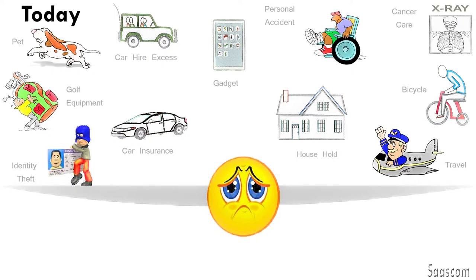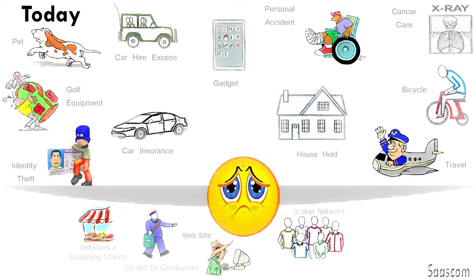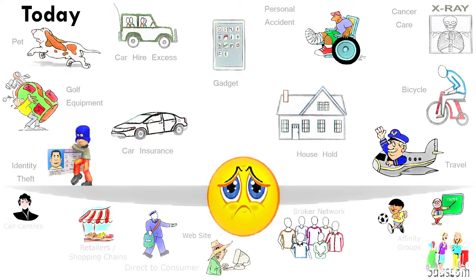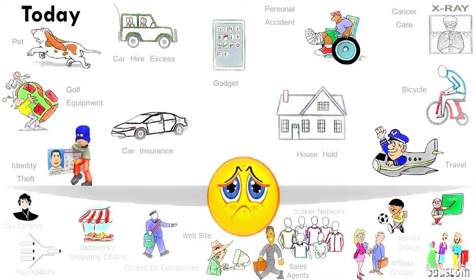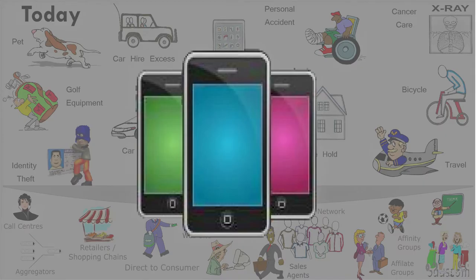The number of distribution channels is also growing rapidly. As well as the direct to consumer and broker channels, there are now the direct websites, partnerships with retailers and shopping chains, selling through affinity groups such as soccer player leagues, teachers unions and golf player associations, sales through call centres, affiliate partners, sales agents and aggregators. The list of alternative distribution channels is expanding quickly, and the introduction of mobile technology adds further to the problem.